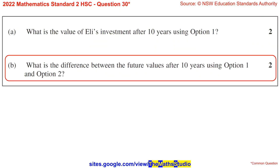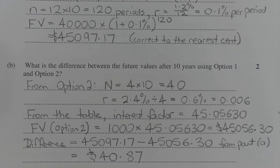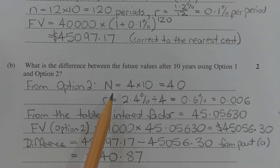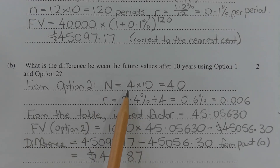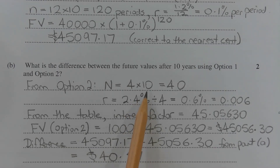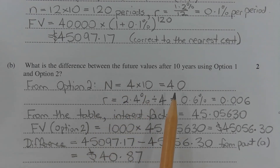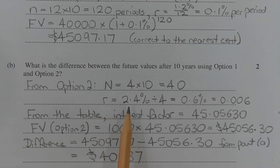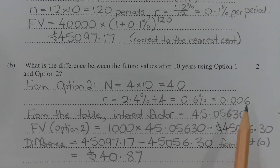Part B: What is the difference between the future values after 10 years using Option 1 and Option 2? Option 2 is an annuity of $1,000 invested at the end of each quarter, earning interest of 2.4% per annum, compounded quarterly. There are four compounding periods per year, so the total number of compounding periods N = 4 × 10 = 40. R = 2.4% per annum ÷ 4 = 0.6% per quarter, or 0.006 in decimal.